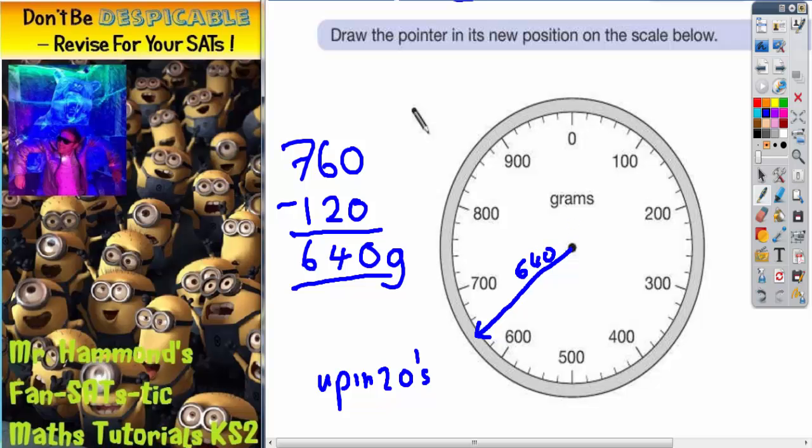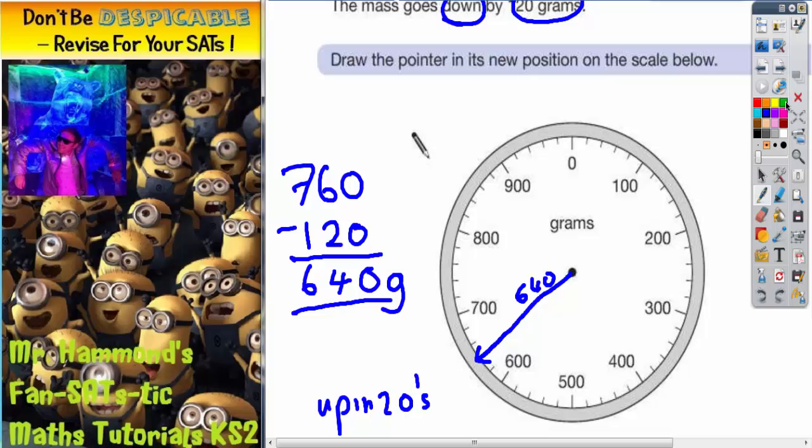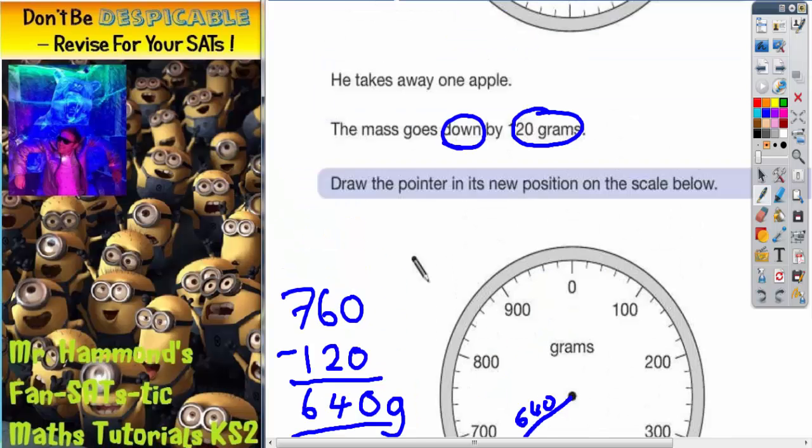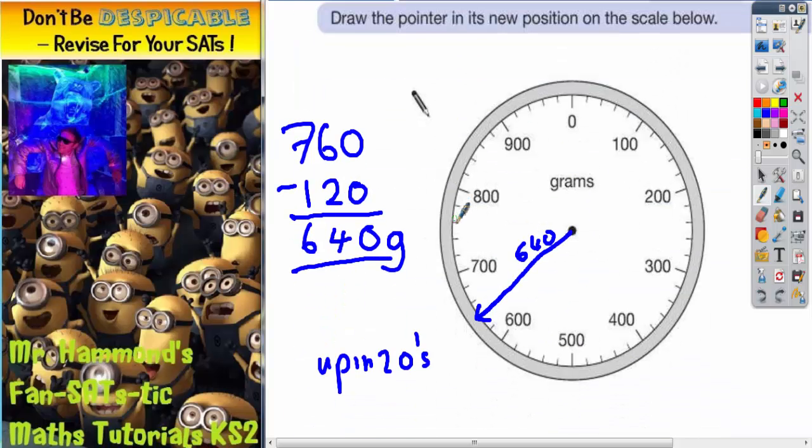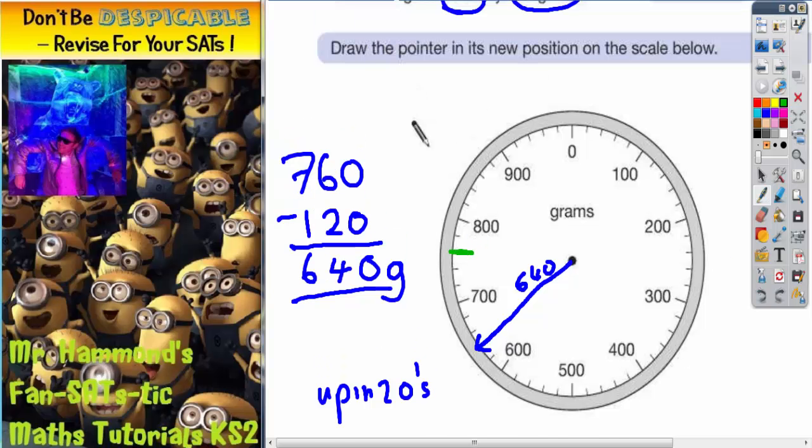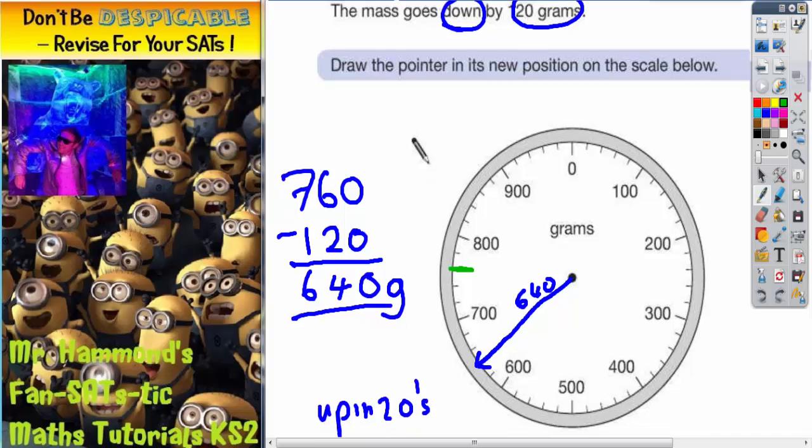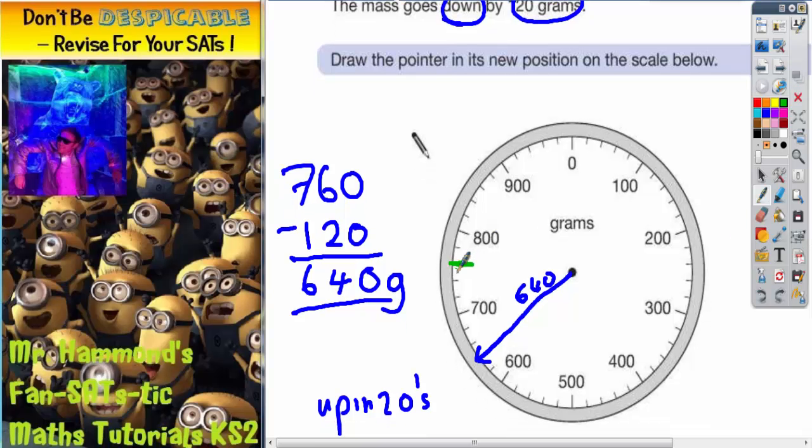There is actually another way you could have done that. Let me just get a different color so we don't confuse ourselves. Because if we were starting on 760, which is here, and we know that we've got to go down by 120 grams. If each gap is worth 20, we could have counted up in 20s. So the next gap down would be 20, then 40, then 60, then 80, then 100, and then 120, which would have got me to this point.